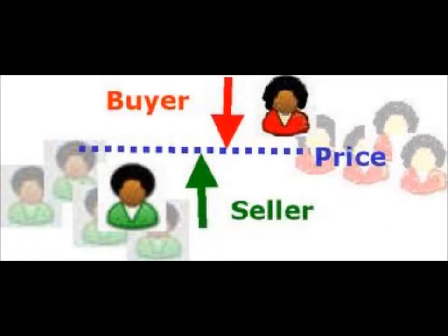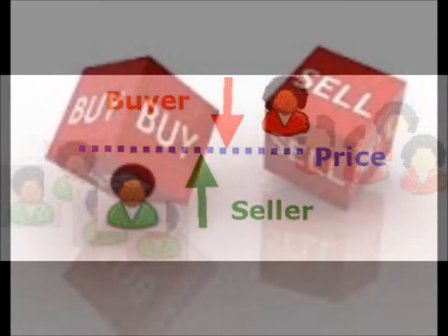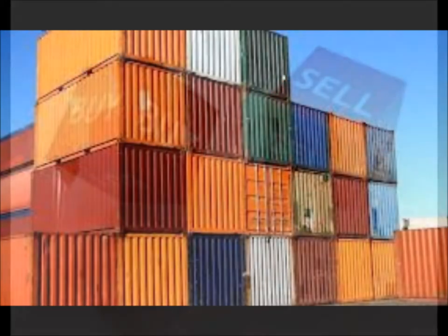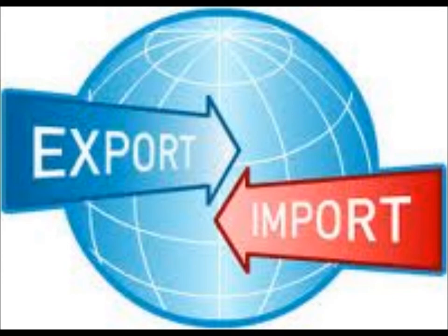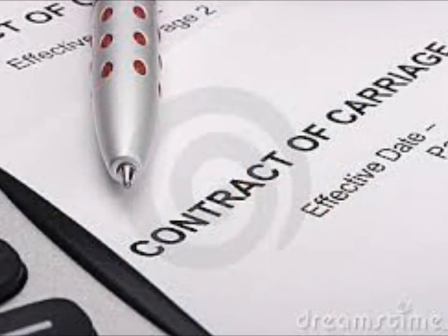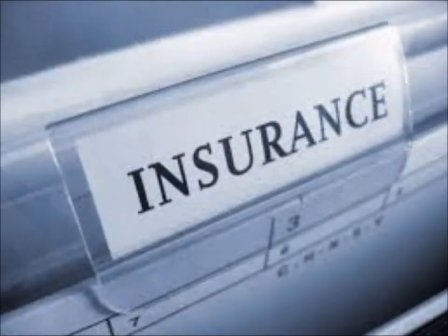The general rules of DAP are based on the seller having to provide the goods and the commercial invoice in conformity with the contract, while the buyer must pay the price of the goods. The seller is entitled to any export license, and the buyer to any import license. The contract of carriage for the seller is obligatory; however, insurance is not. As for the buyer, the contract of carriage is not applicable, and neither is insurance.